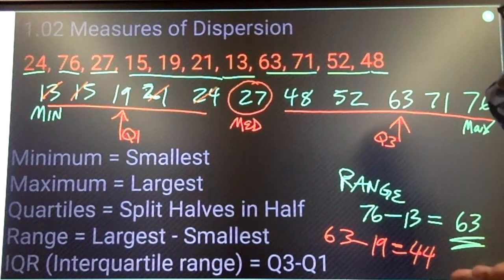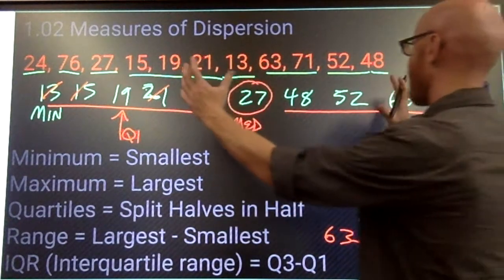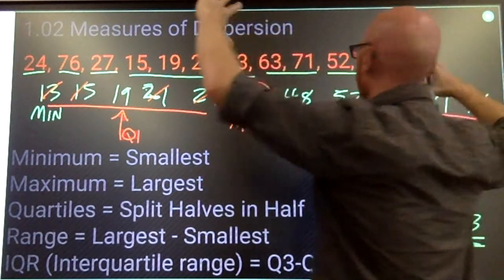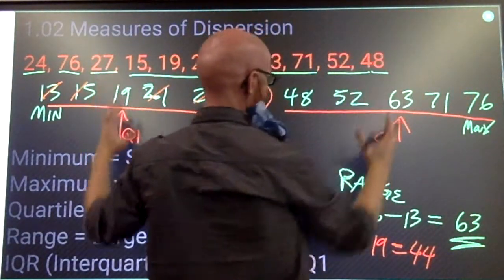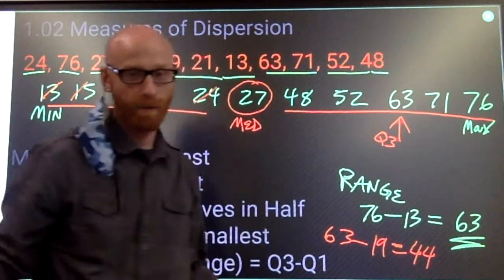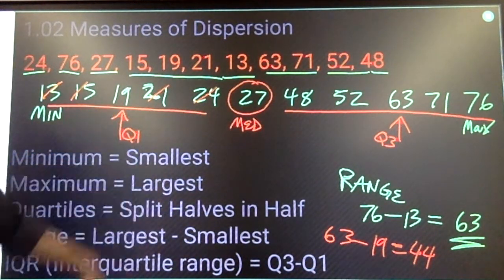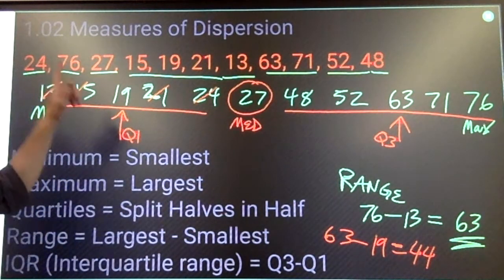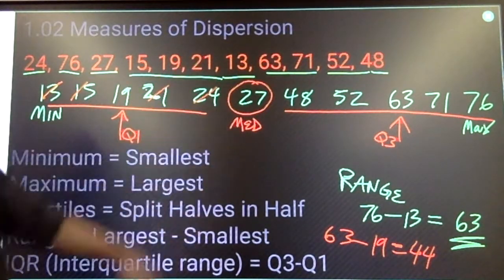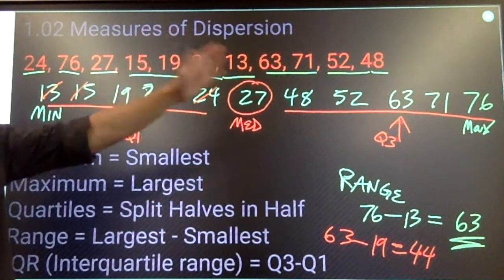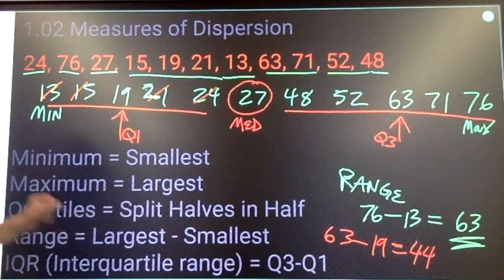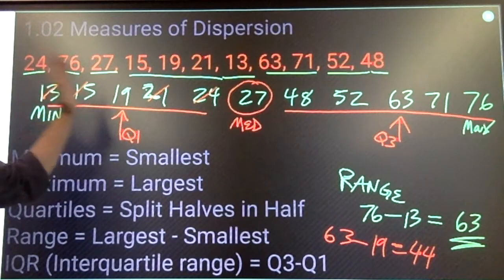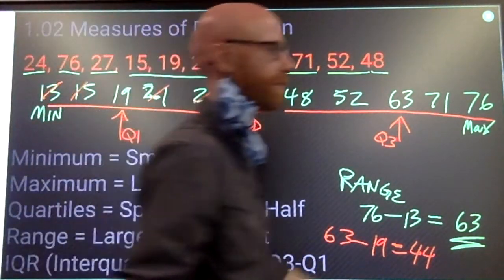63 minus 19 is 44. Again, this is giving me a distance. The distance from my first to my third quartile is 44. The middle 50% of my data is spread over a distance of 44. That's the information that's given to me, measures of dispersion. So, quartiles split the halves in half after you find a median. Minimum is the smallest. Maximum is the largest. Range is the distance from the smallest to the largest. Interquartile range is the distance from one quartile to the other.